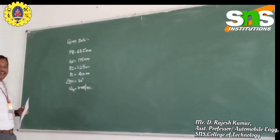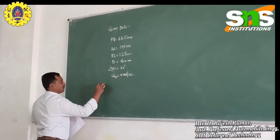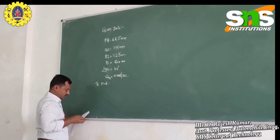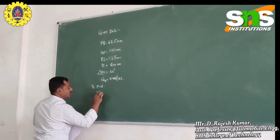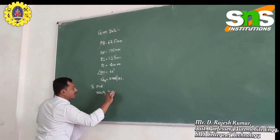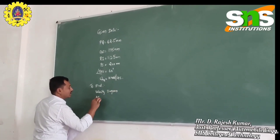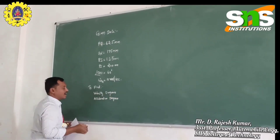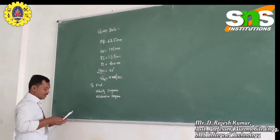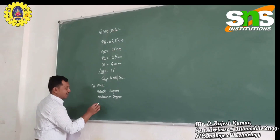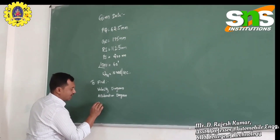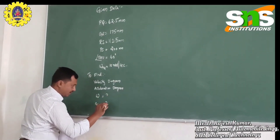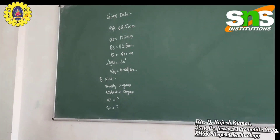So this is the given data. What we have to find: first, draw the velocity diagram, then the acceleration diagram. From these diagrams, we have to find the angular velocity (omega) and angular acceleration (alpha) of the links QR and RS.